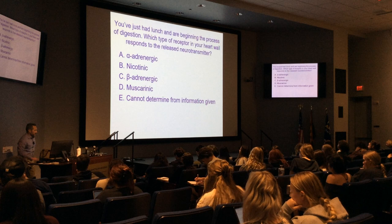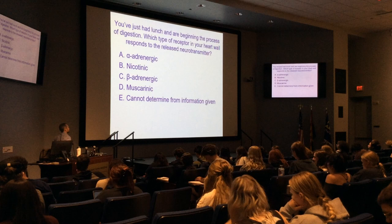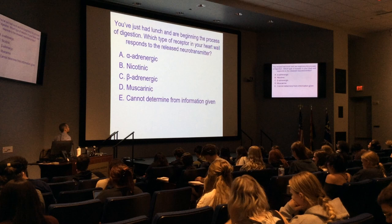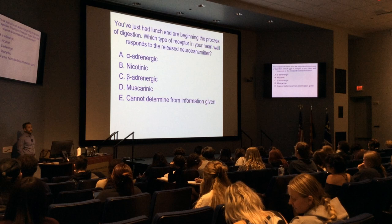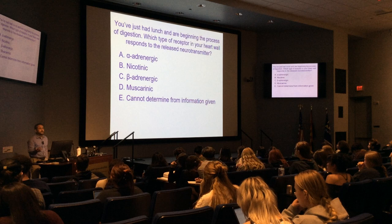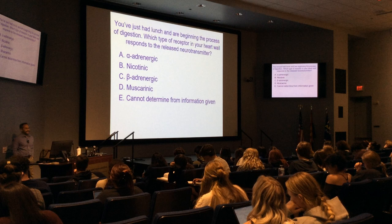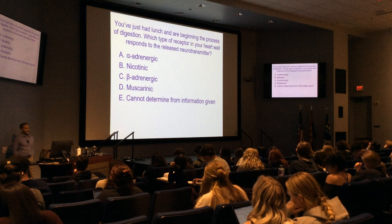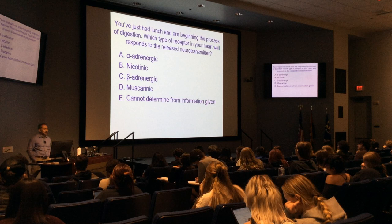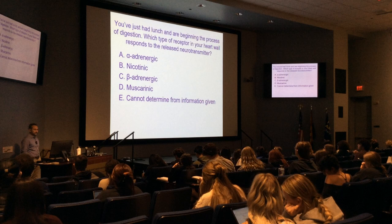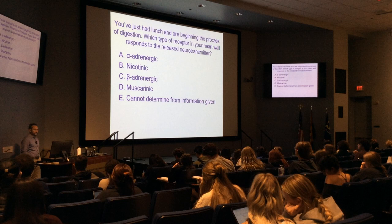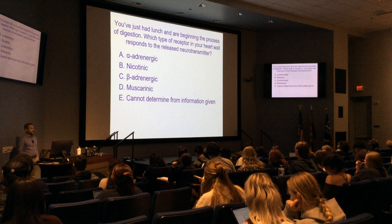You've just had lunch and are beginning digestion — which type of receptor in your heart wall responds to the released neurotransmitter? We're talking about parasympathetic because digestion is parasympathetic. The released neurotransmitter is acetylcholine. The heart wall responds via a muscarinic receptor — D, muscarinic.